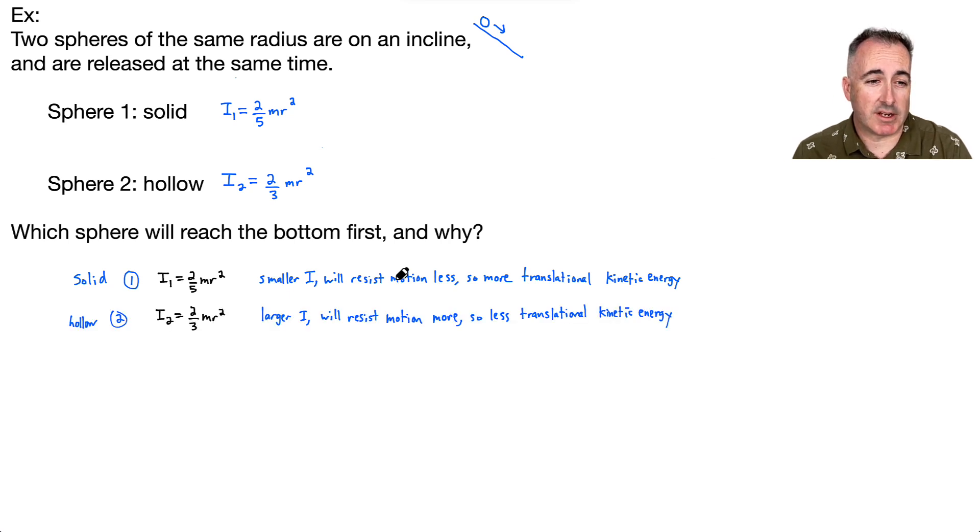And we could say the same idea for this hollow one, number two. Because it has a larger I, the moment of inertia, that means it'll resist the motion more. And that means it has less translational kinetic energy left over. The basic conclusion is this one right here arrives first.